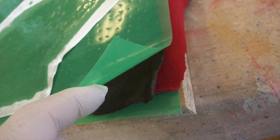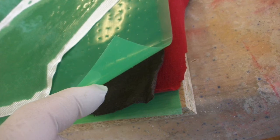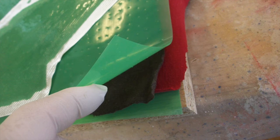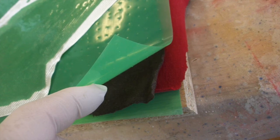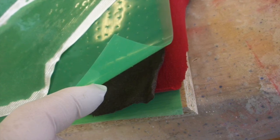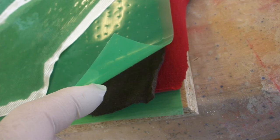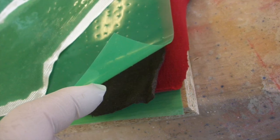Like this, the air can pass out and also the resin that is too much can pass out. It will go into the cotton cloth and you will have a really nice lamination without any air bubbles inside.